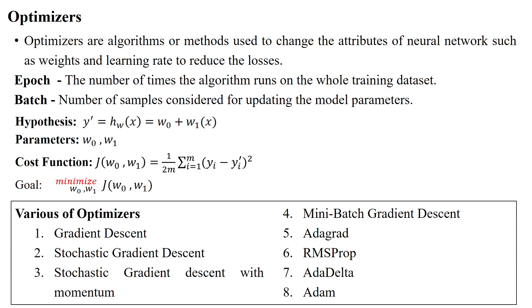Optimization in machine learning and deep learning is carried out to change the attributes of neural networks, such as weights and the learning rate, to decrease the cost or loss which is created by the network.